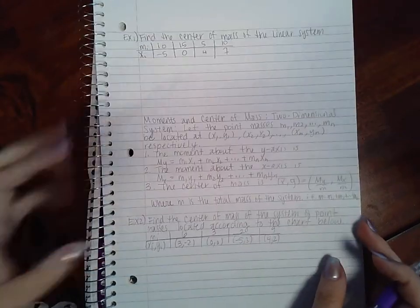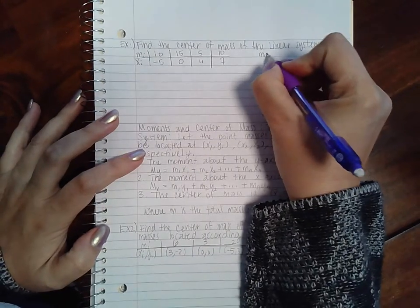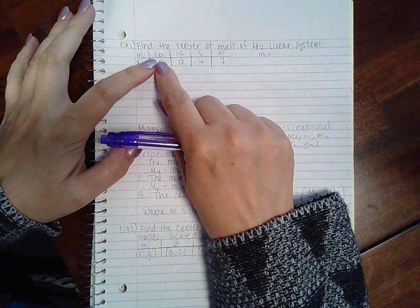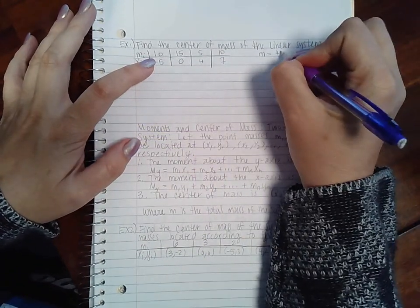Here it says find the center of mass of the linear system. The first thing I want to do is find my total mass, which I get by adding all of these together. So 10 and 15 is 25, that'll be 30, this is going to be 40.